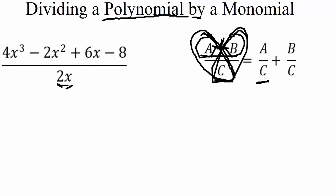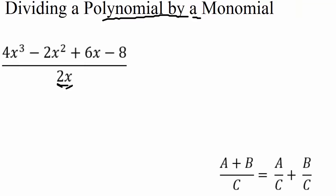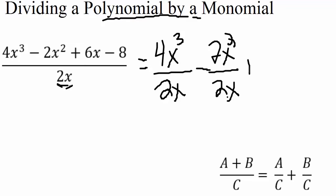So we're just going to split up the division and take every term in the numerator and divide it by our denominator. So what that's going to look like is we're going to take the 4x³ and put it over 2x, move over the minus sign and do 2x² over 2x. Then we have our plus sign, 6x over 2x minus 8 over 2x. So that is what that division is going to look like when we split it up.